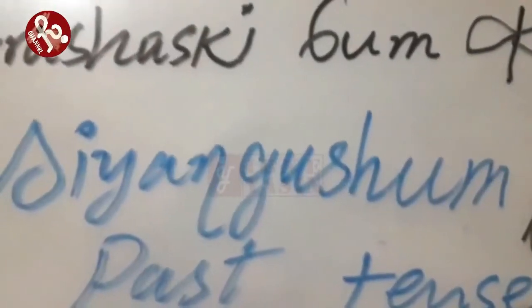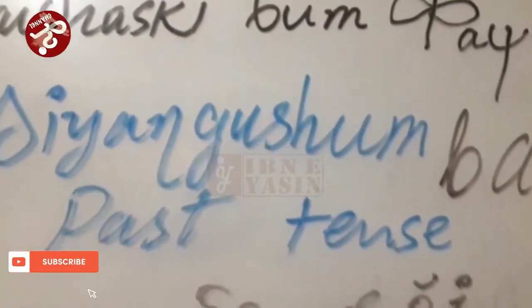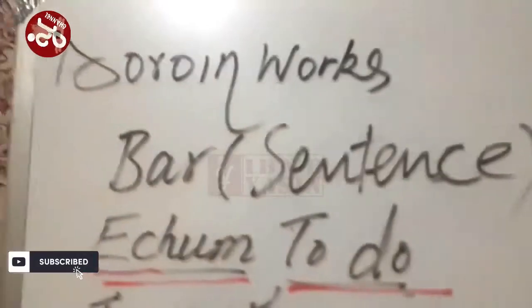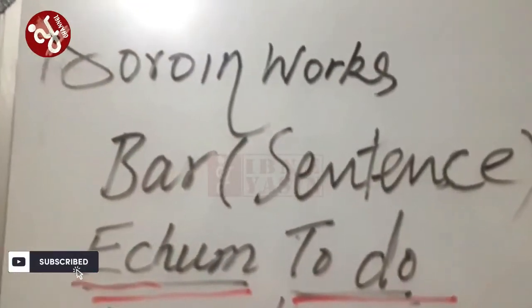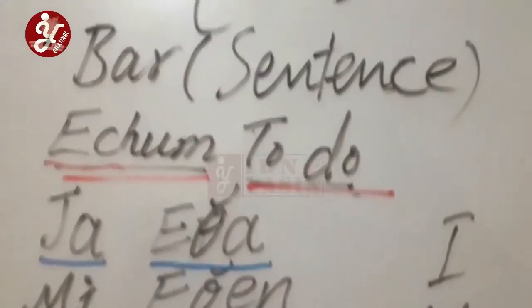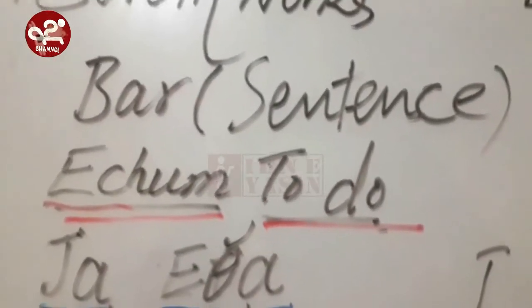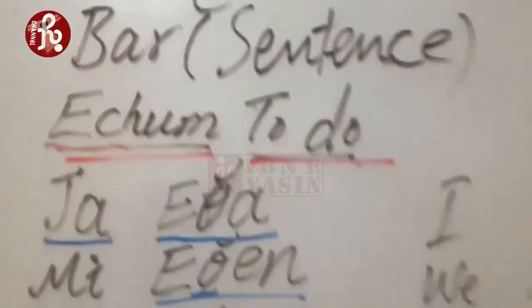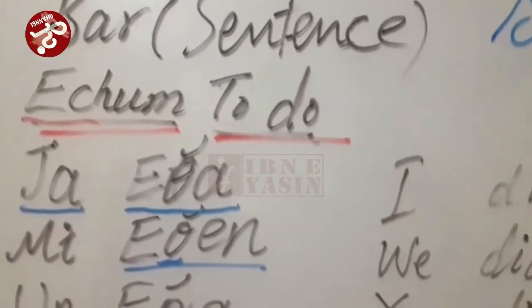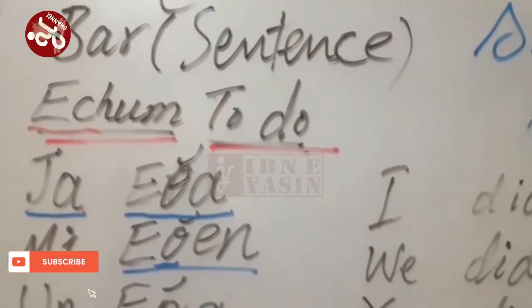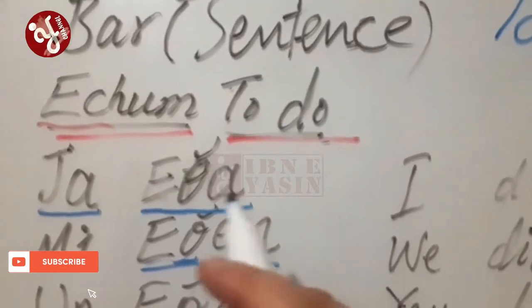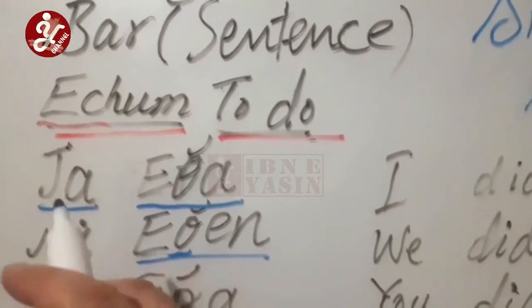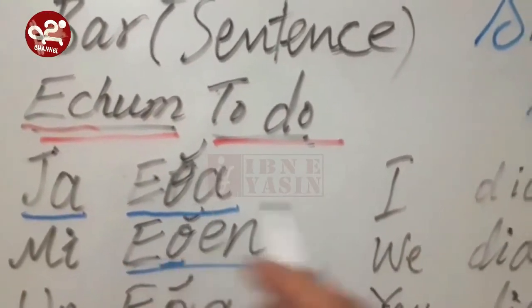We are talking about the 'dyangushum bar', that means the past tense. Today we are discussing 'dorong'. We have taken an example of 'echum', meaning 'to do'. We have already discussed the present tense of 'echum', and now we are discussing the past tense. 'Ja eta' means 'I did'.